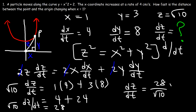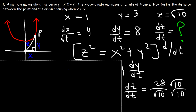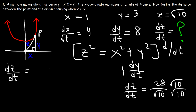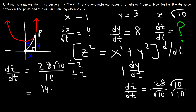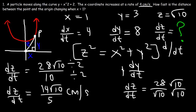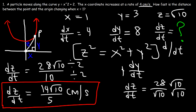Let's rationalize by multiplying the top and bottom by the square root of 10. This gives 28 times the square root of 10 divided by 10. Dividing the top and bottom by 2: half of 28 is 14, half of 10 is 5. So dz/dt is 14 times the square root of 10 over 5, with units of centimeters per second. That's the rate at which the distance between the point and the origin is changing when x equals 1.